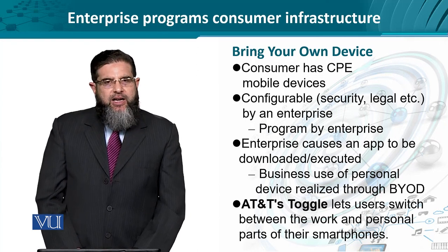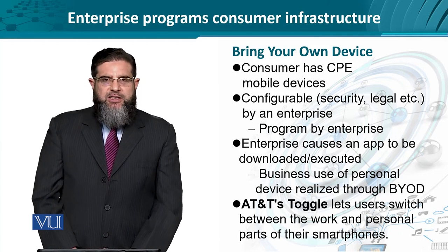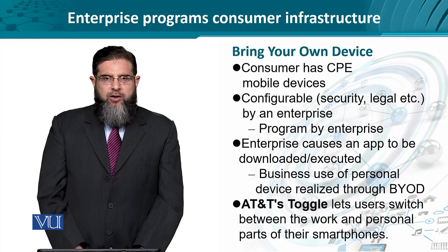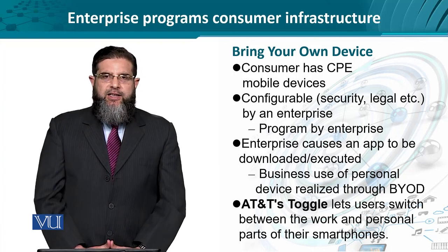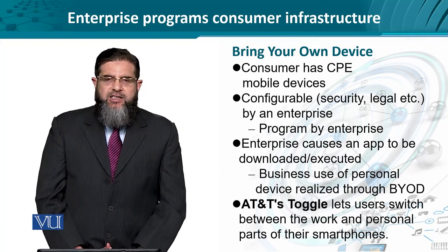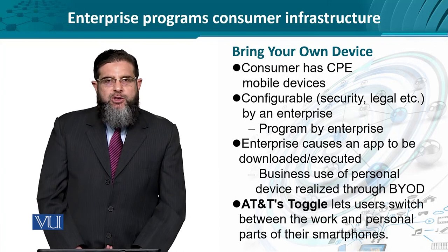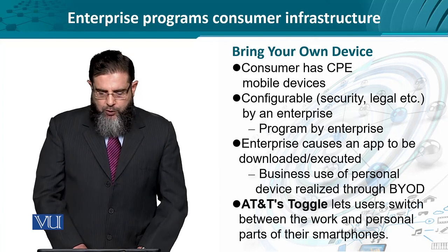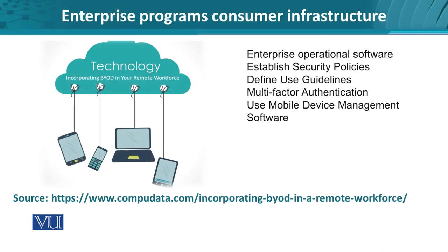This means we can think about an entirely different kind of business execution model where personal devices such as smartphones and PCs are used for business activities regarding work from home or use within an enterprise. As an example, AT&T introduced an app known as Toggle that lets users switch between work and personal partitions on their own smartphones — a complete manifestation of programming the consumer infrastructure.